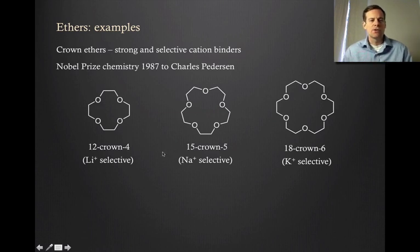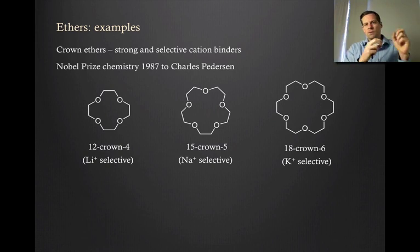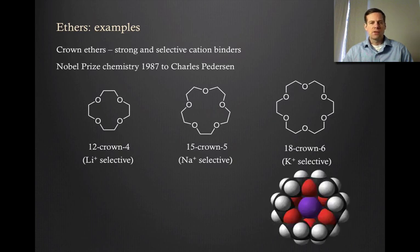12-crown-4 is selective for binding to lithium cations. 15-crown-5 has a selectivity for sodium. And 18-crown-6 is highly selective for the potassium cation. That's actually incredibly interesting that even though lithium, sodium, and potassium are oftentimes viewed as being very similar in their chemistry, and they are, the idea that you can actually separate these out by selectively binding to one is pretty remarkable.